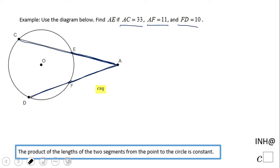We have a very important property, which is right here. The product of the lengths of the two segments from the point to the circle is constant. That is working for this circle or any other circle. So what does it mean here?